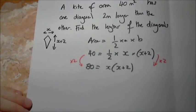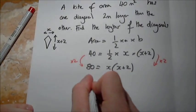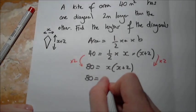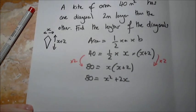Next step, let's try and get rid of those brackets. So 80 equals x times x is x squared, x times two is two x.